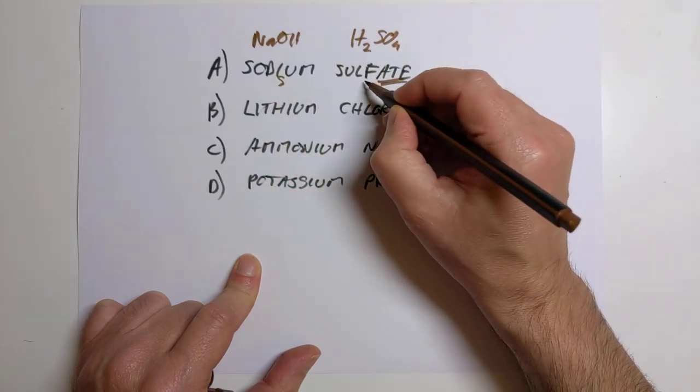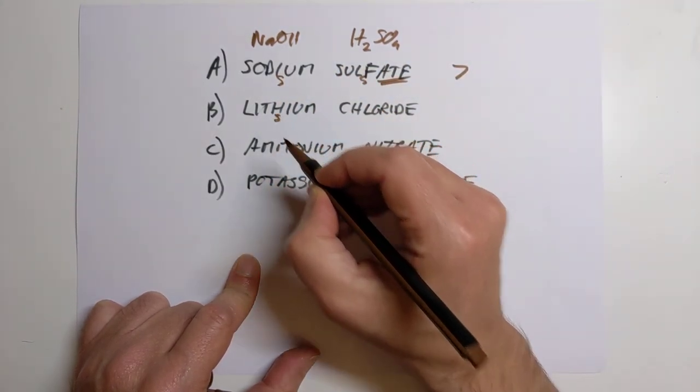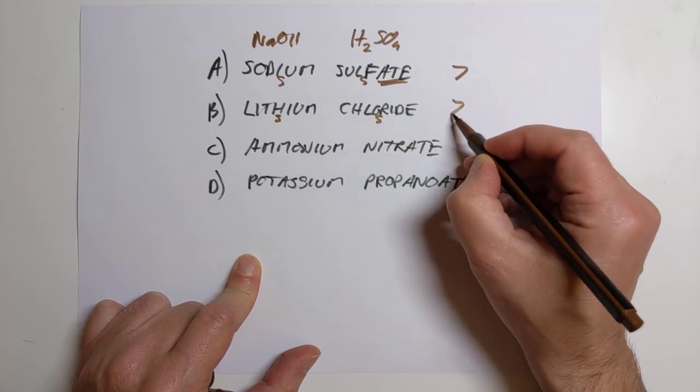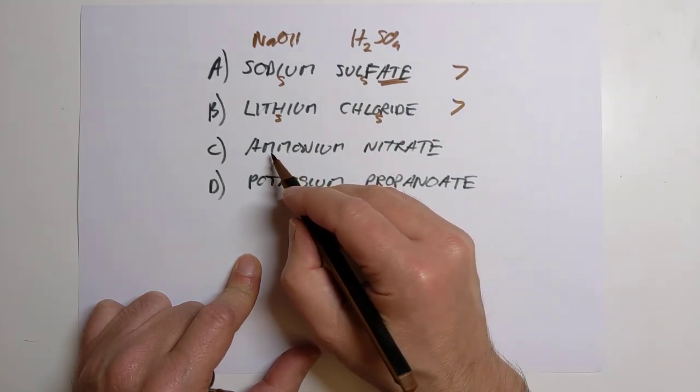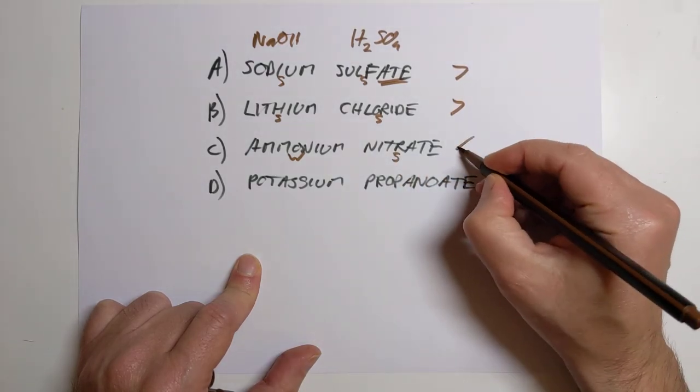So that's basically strong and strong. So this will be pH 7. This is lithium hydroxide, strong and hydrochloric acid, also strong, pH 7. This is a weak base and a strong acid. So this will be less than 7.